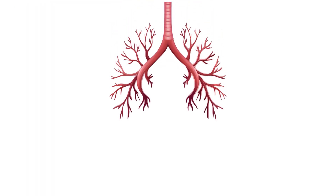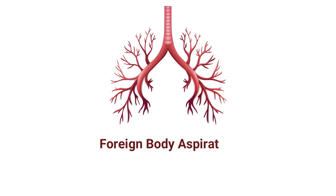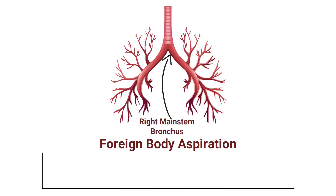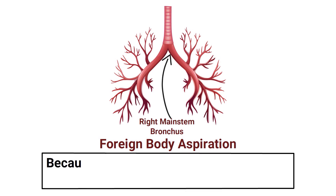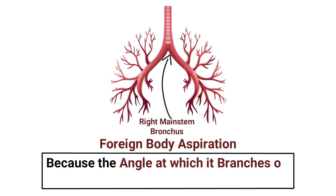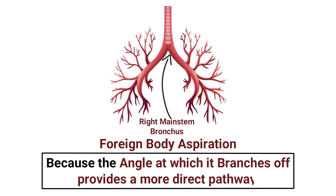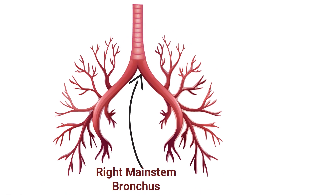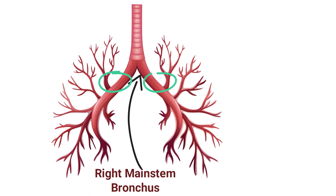Other than right main stem intubations, foreign body aspiration is also more common in the right main stem bronchus, because the angle at which it branches off provides a more direct pathway.